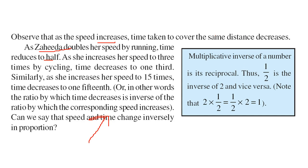So the multiplicative inverse here, that is if 2 is a number, multiplicative inverse is 1 by 2 because when they are multiplied, it must give 1.